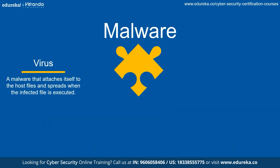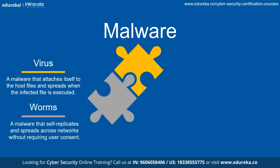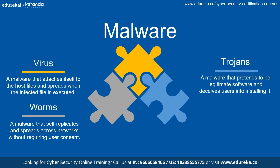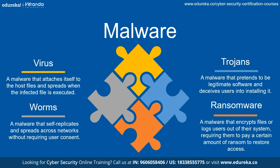Talking about various malware attacks: viruses are malware that attach themselves to a host file and spread when the infected file is executed. Worms are malware that spread by themselves without needing to attach to other software. A trojan is malware that pretends to be something useful or fun but is harmful once opened — like a fake present under a Christmas tree that looks exciting but has something scary inside. Ransomware locks your files and demands money to unlock them — like a kidnapper holding something valuable and asking for ransom.